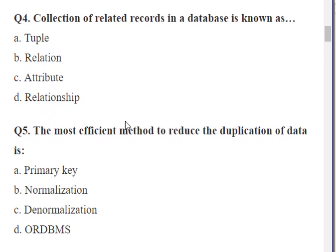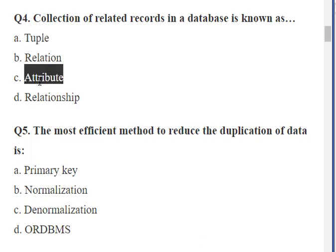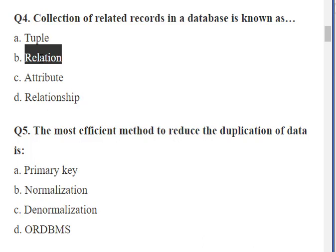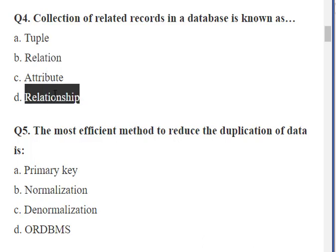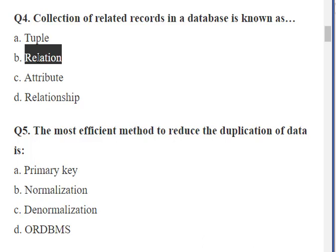Question number four: 'The collection of related records in a database is known as ___' with options: tuple, relation, attribute, and relationship. In relational database terminology, a tuple is a record — a collection of attributes or fields. A table is called a relation, and a relationship is a connection between two relations on some common attribute. Therefore, relation is the correct answer.